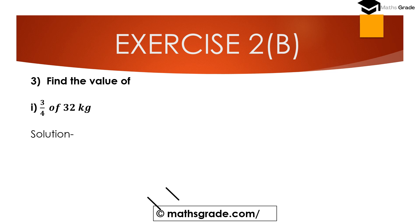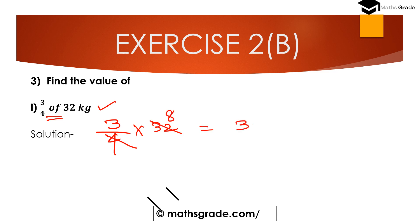Question number 3, first part: Find the value of 3 divided by 4 of 32 kg. The value of 3/4 of 32 kg is 24 kg.